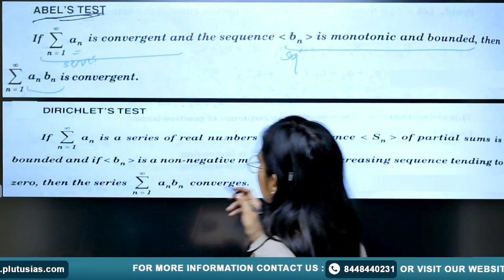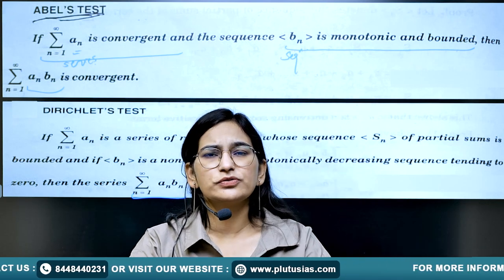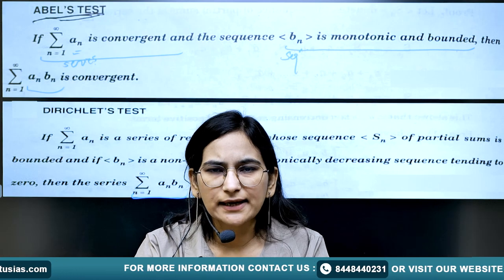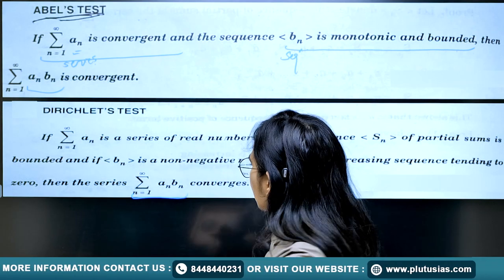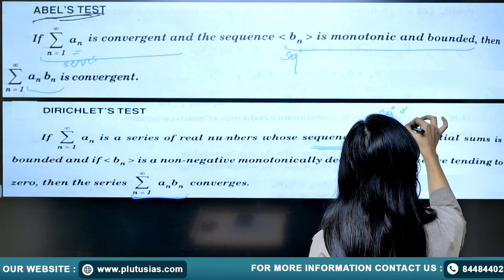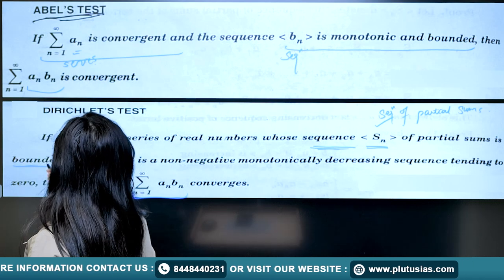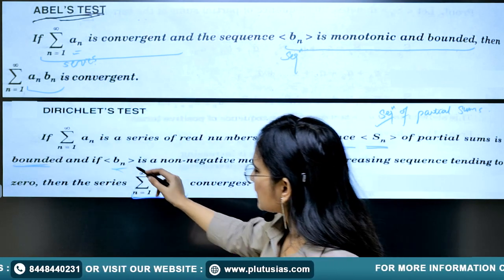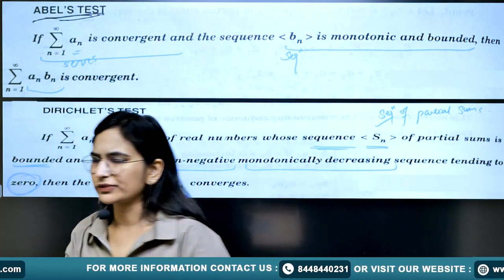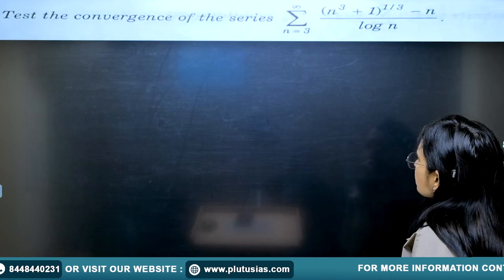Dirichlet's test again says: have a product of two things, but if it is not possible to find the convergence of the series Σ aₙ directly, then form the partial sum Sₙ (sum of first n terms) and show that the sequence of partial sums is bounded. The second sequence bₙ should be non-negative, monotonically decreasing, and it should tend to zero. If these conditions are satisfied, you can apply Dirichlet's test.